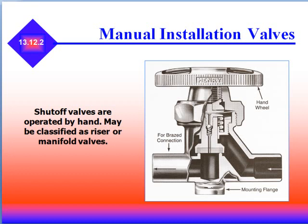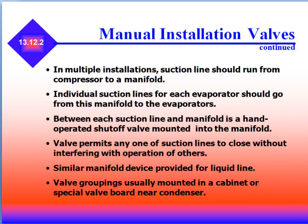Shutoff valves are operated by hand and may be classified as riser or manifold valves. On multiple installations, suction lines should run from the compressor to a manifold, and individual suction lines for each evaporator should go from the manifold to the evaporator. Between each suction line and manifold is a hand-operated shutoff valve mounted into the manifold. The valve permits any one suction line to close without interfering with the operation of the others. Similar manifold devices are provided for the liquid line, and valve groupings are usually mounted in a cabinet or special valve board near the condenser.